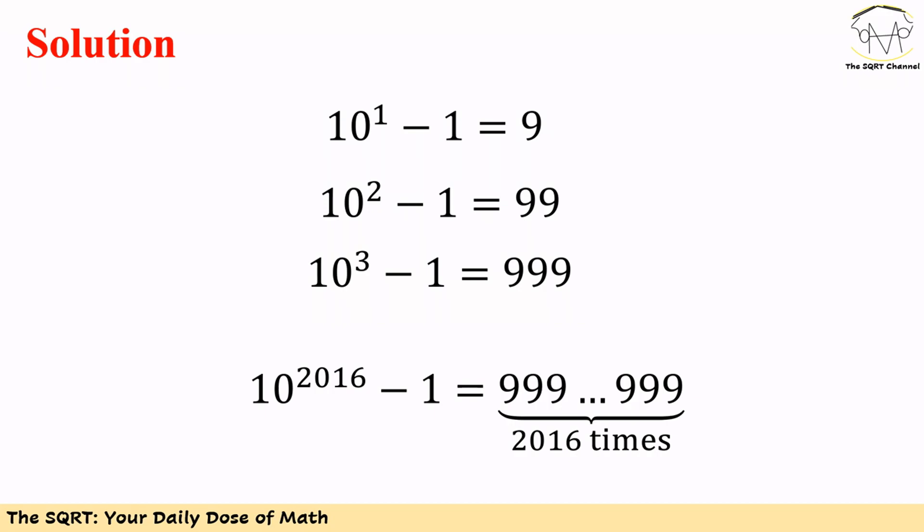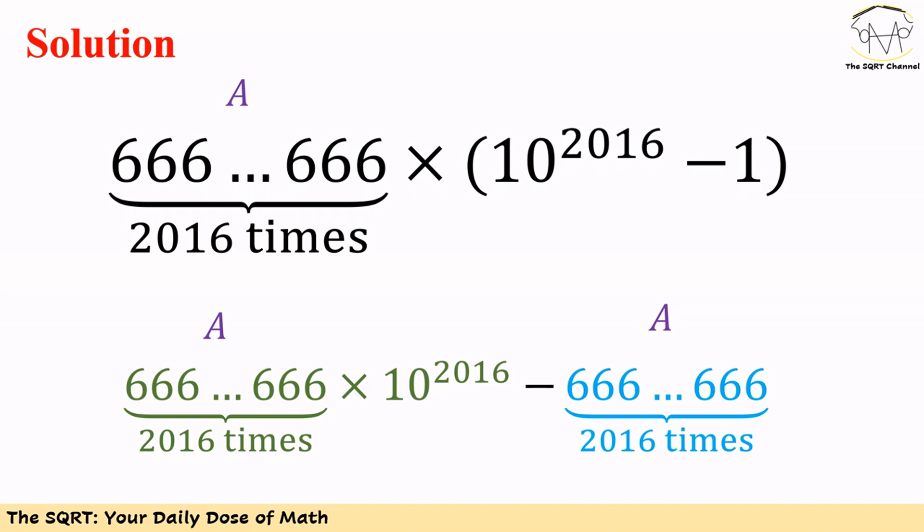To solve this problem, remember that for B we only have nines in the digits. When we have 9, we can write it as 10^1 minus 1. For 99 we can write it as 10^2 minus 1. Following the same approach, we can write the number B as 10^2016 minus 1.